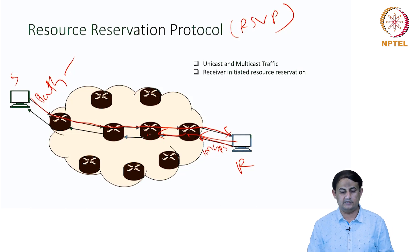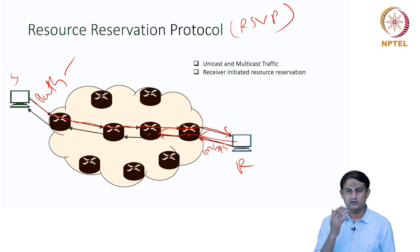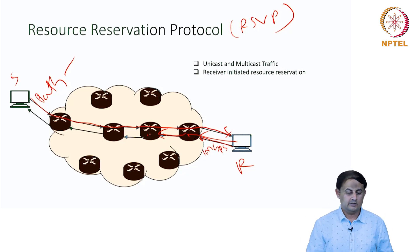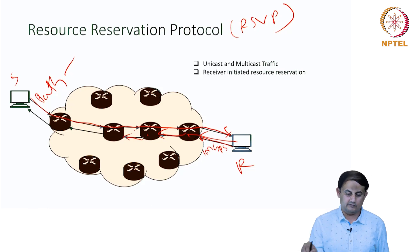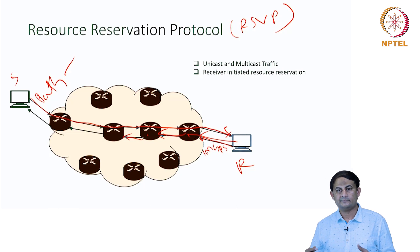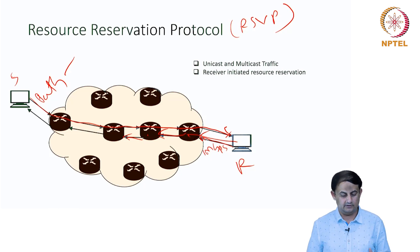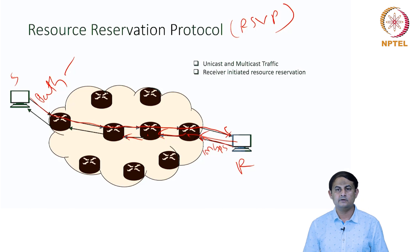Each upstream router independently decides whether 1 Mbps bandwidth can be reserved for this particular transmission. The key point is: path messages in the forward direction identify the path to be taken — the places where resources need to be reserved — and the reserve message in the reverse direction actually reserves the resources for that transmission.